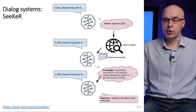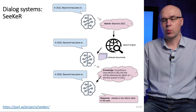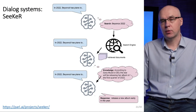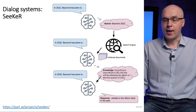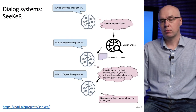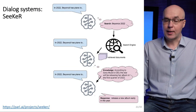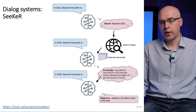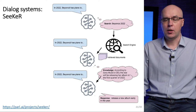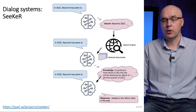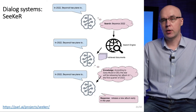Here is an example of processing a request by the Seeker chatbot. A user wants to know what Beyonce is planning for 2022. The chatbot accesses the internet with the query 'Beyonce 2022' and finds many documents. It selects the most relevant one — marked as 'knowledge' on the diagram. According to Sony Music's CEO, the star will be releasing her album in the first quarter of 2022. The response generated is: 'In 2022, Beyonce has plans to release a new album early in the year.'